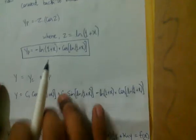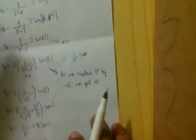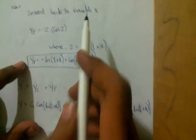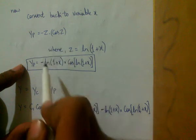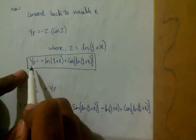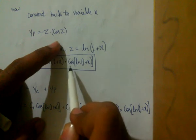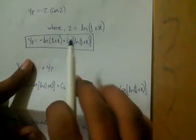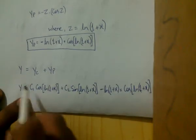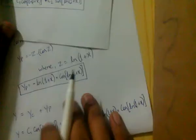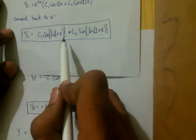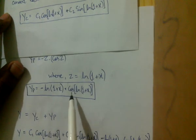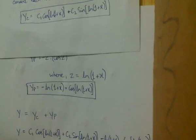We found yp in terms of z, but the answer must be in terms of x. Since z = ln(1 + x), we substitute: yp = −ln(1 + x)·cos(ln(1 + x)). The complete solution is y = yc + yp = c1·cos(ln(1 + x)) + c2·sin(ln(1 + x)) − ln(1 + x)·cos(ln(1 + x)).